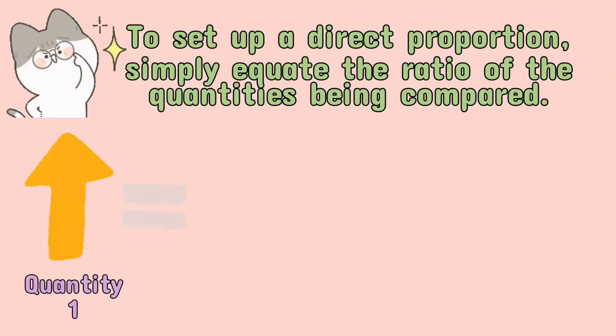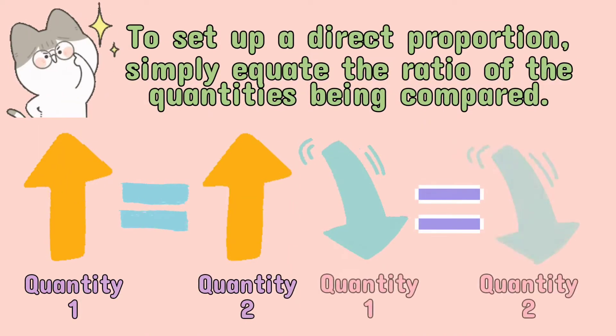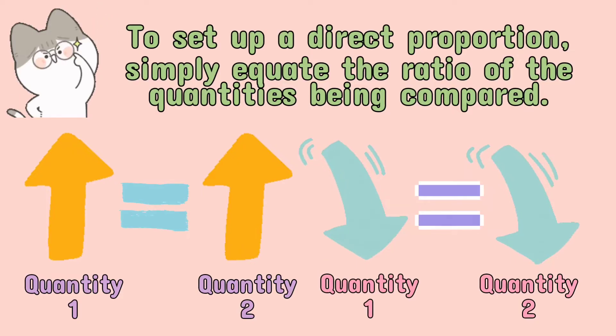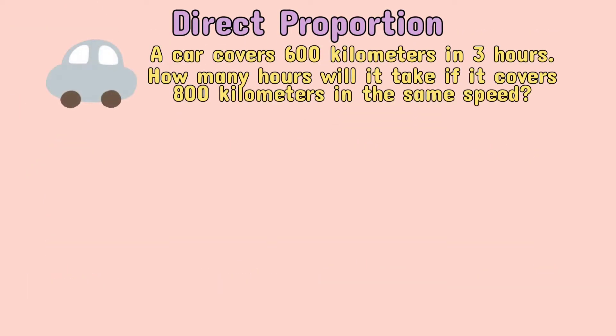To set up a direct proportion, simply equate the ratio of the quantities being compared. Let us study this example. A car covers 600 kilometers in 3 hours. How many hours will it take if it covers 800 kilometers at the same speed?